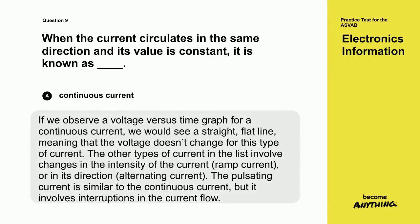If we observe a voltage versus time graph for a continuous current, we would see a straight, flat line, meaning that the voltage doesn't change for this type of current. The other types of current in the list involve changes in the intensity of the current, ramp current, or in its direction, alternating current. The pulsating current is similar to the continuous current, but it involves interruptions in the current flow.